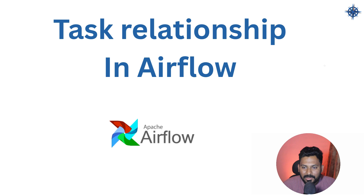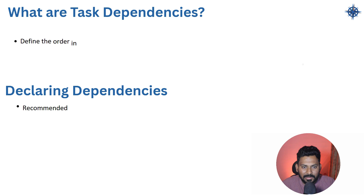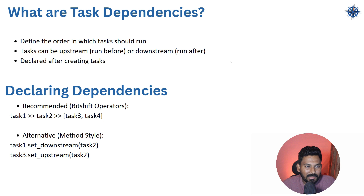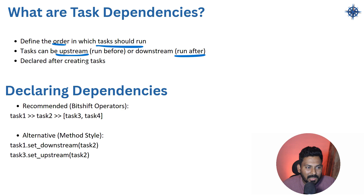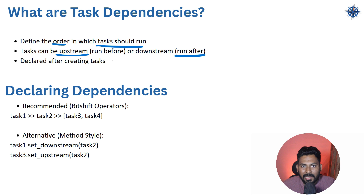In Airflow, dependencies define the order in which tasks should run. A task can be upstream — meaning it runs before — or downstream — meaning it runs after a particular task. You have to first declare the task and then define the dependencies; otherwise Airflow will not identify your task. So first you define the DAG, and at the end of your DAG you define the dependencies.